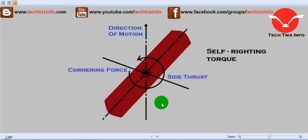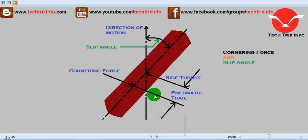You can see on the screen the cornering force is over here and the side thrust appears not offset. Actually the reality is like this: the side thrust and the cornering force are offset by this distance which is called the pneumatic trail.